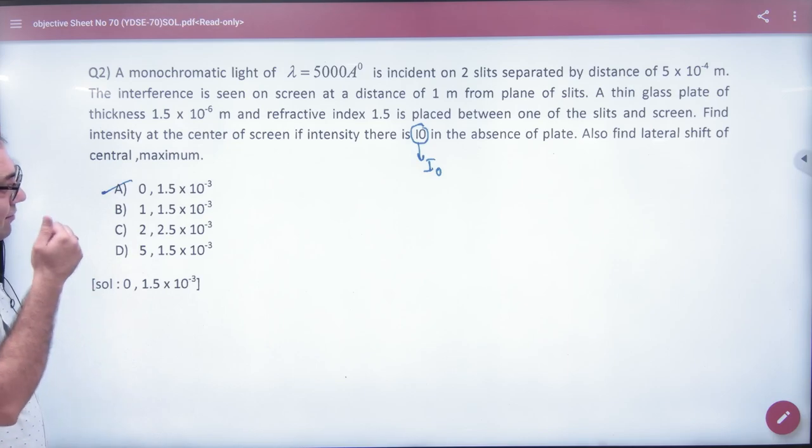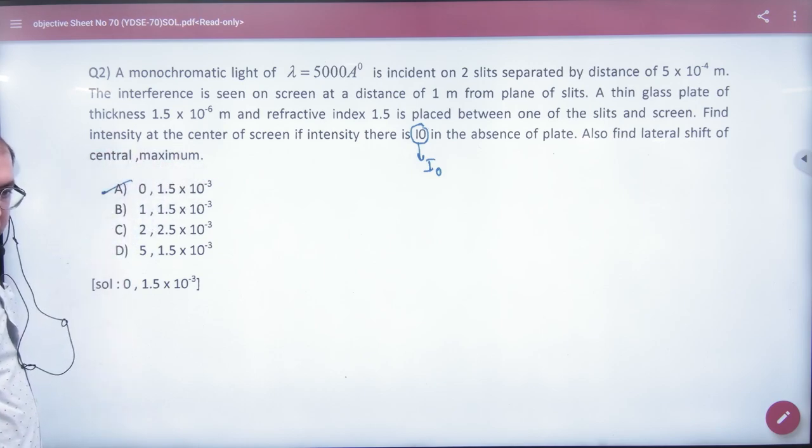Find intensity at the center of the screen. If intensity, there is I₀ in the absence of the plate. So maximum intensity is I₀. After keeping slab, what will be intensity? What will be you to tell? And lateral shift value also. I will tell you what will happen.